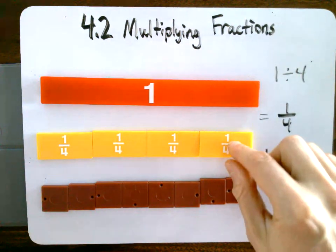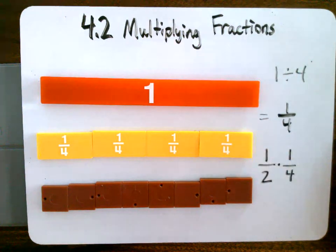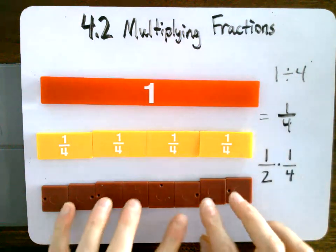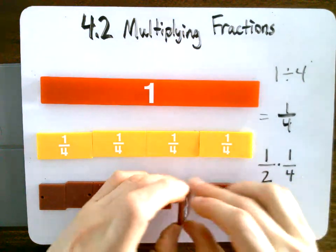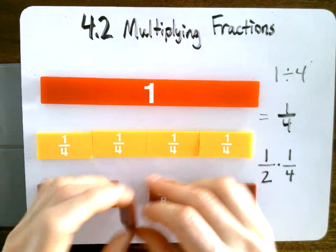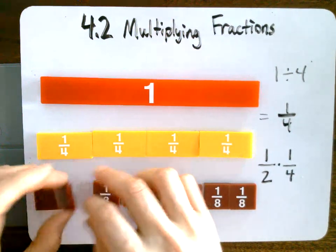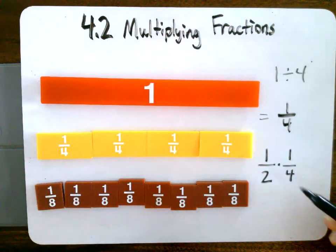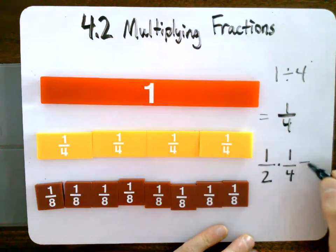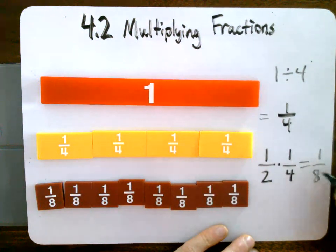So if you were to imagine taking each one of these and cutting them into two, that's what half is, right? And so you can probably figure out that we are going to have 8 pieces now. So half of 1 fourth is 1 eighth. Okay, remember of usually means times, half of 1 fourth equals 1 eighth.